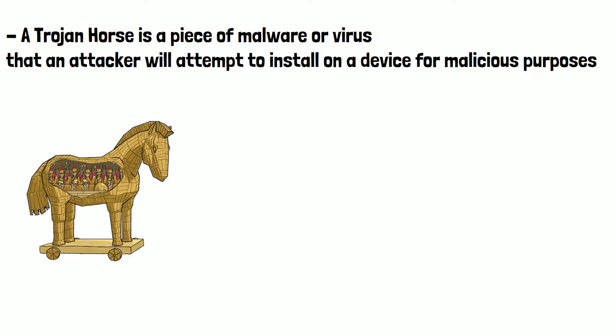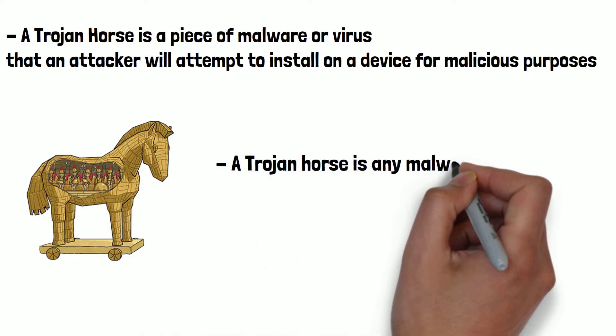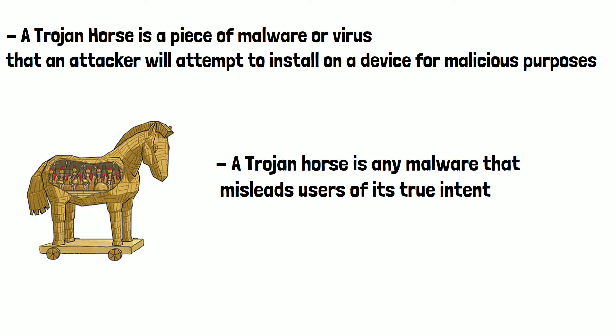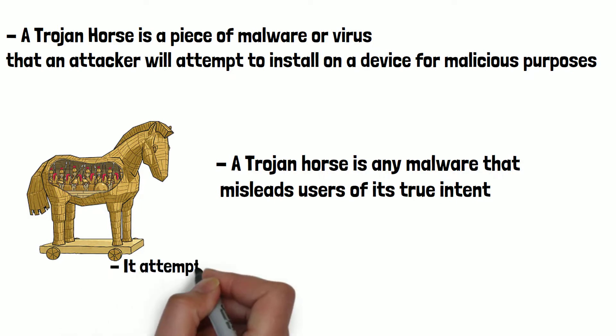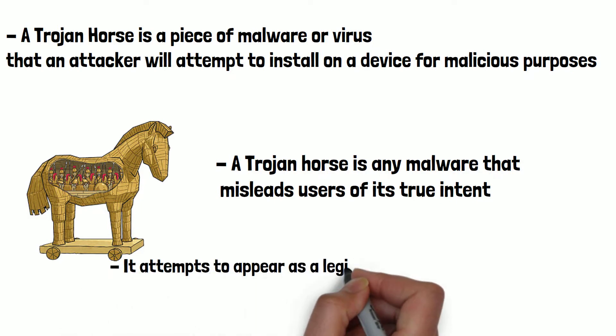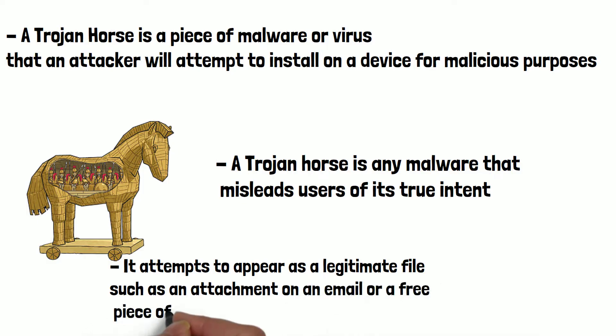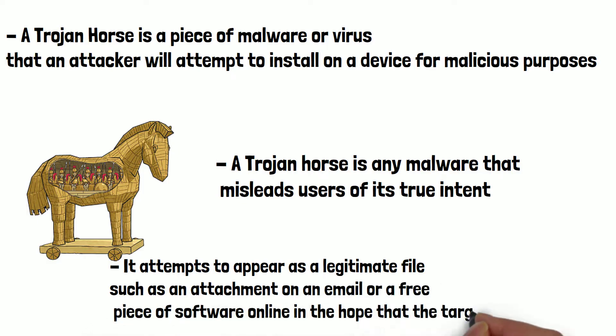Trojan horse malware works in the same way. A Trojan horse is any malware that misleads users of its true intent. It attempts to appear as a legitimate file, such as an attachment on an email or a free piece of software online, in the hope that the target will download it. Once they download what they thought was a legitimate file, the malware or virus will be installed on their device.